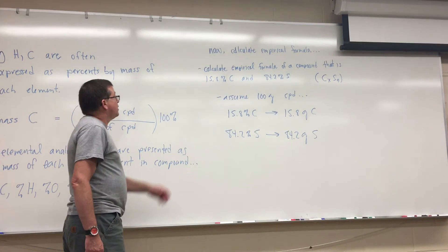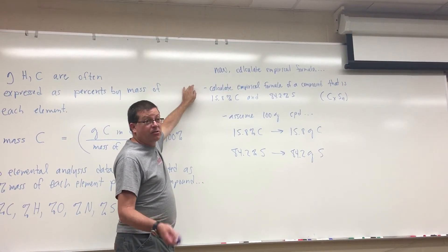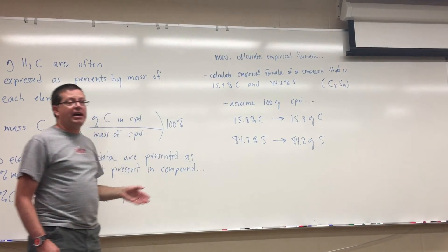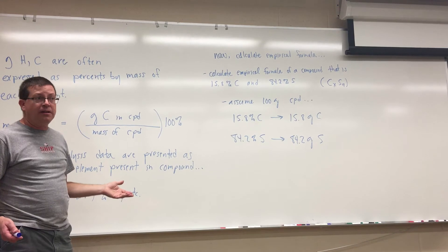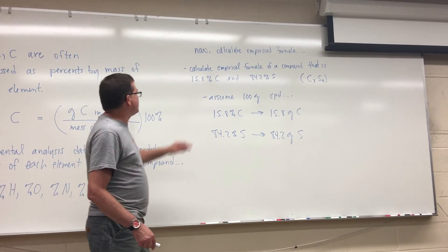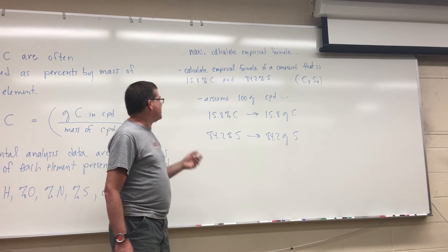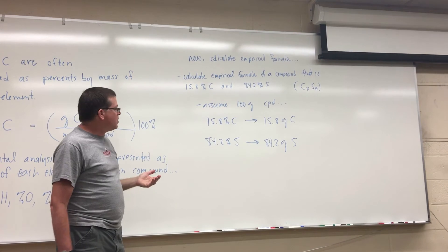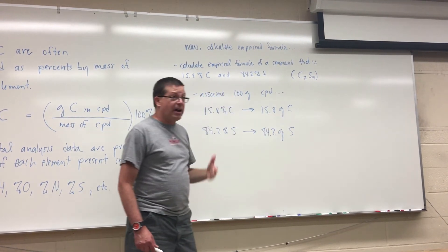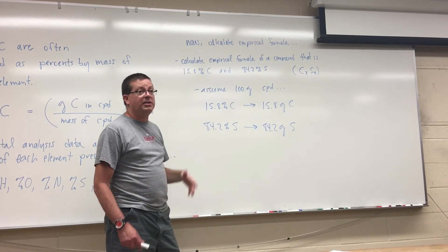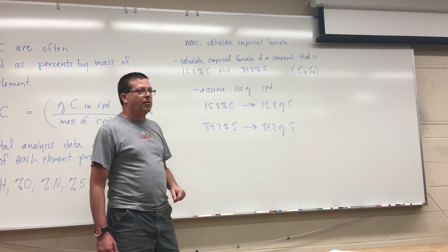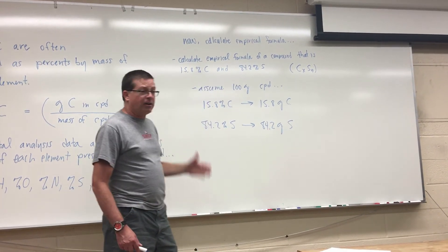Here's a simple example: calculate the empirical formula of a compound found by elemental analysis to be 15.8% carbon and 84.2% sulfur by mass. Since these are already in percent by mass, we assume we're starting with 100 grams of compound. That means 15.8% carbon converts directly to 15.8 grams of carbon, and 84.2% sulfur converts directly to 84.2 grams of sulfur.